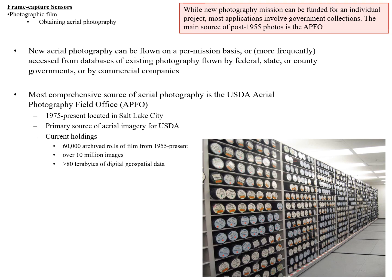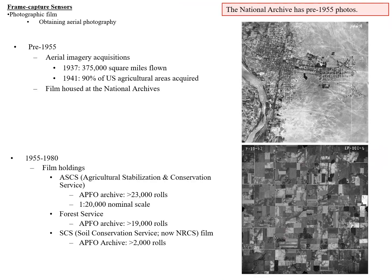That 80 terabyte figure is out of date and is probably even more now. Pre-1955, the big early aerial image acquisitions were in 1937 and then in 1941. In 1941, 90% of U.S. agricultural areas were acquired to look at the impacts of the Dust Bowl. Those films are housed at the National Archives.